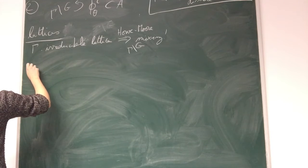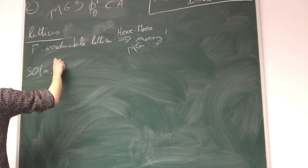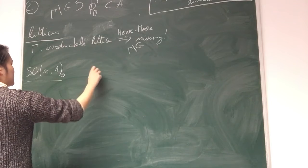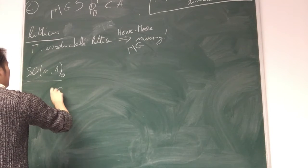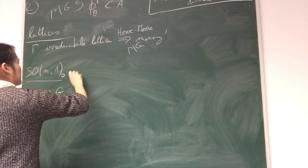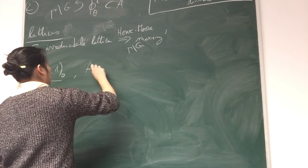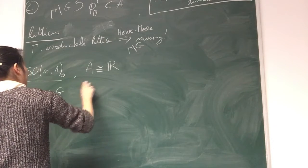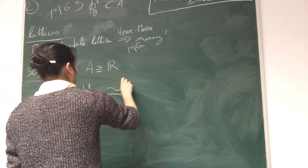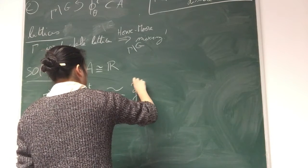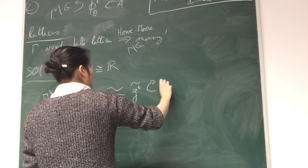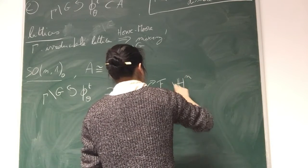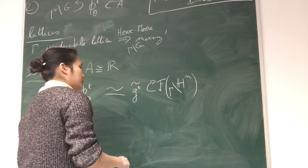Now let me look at another setting. Say G is SO(n,1). Then it turns out that A is of dimension 1. So when I'm looking at this dynamical system, it's the same as looking at the frame flow.